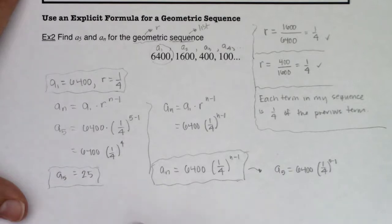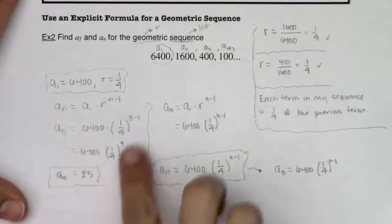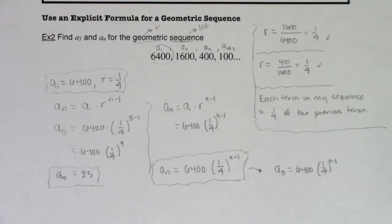So I always just find it easier to find the general term first and then plug in my specific n value. But you're more than welcome to just go straight to a sub 5. So bottom line, if you have a geometric sequence,